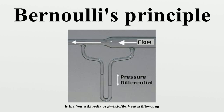Accelerating it along the streamline. Fluid particles are subject only to pressure and their own weight. If a fluid is flowing horizontally along a section of a streamline where the speed increases, it can only be because the fluid on that section has moved from a region of higher pressure to a region of lower pressure. And if its speed decreases, it can only be because it has moved from a region of lower pressure to a region of higher pressure. Consequently, within a fluid flowing horizontally, the highest speed occurs where the pressure is lowest, and the lowest speed occurs where the pressure is highest.